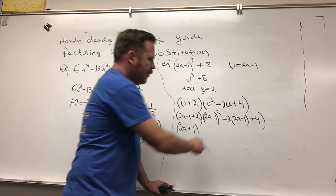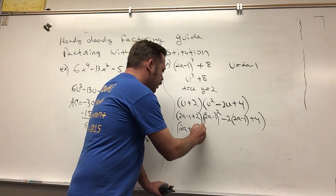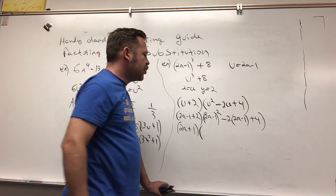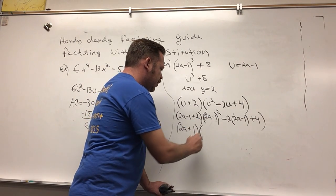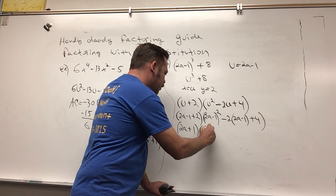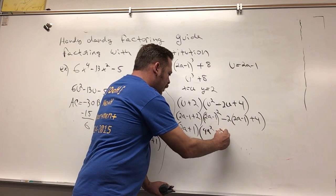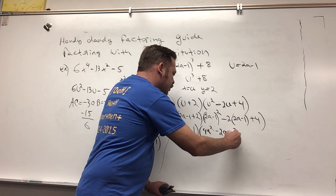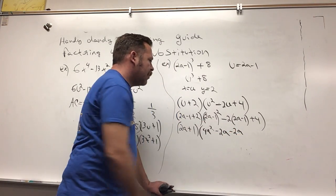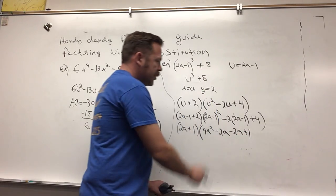I'm going to do everything in here. I gotta square that first, order of operations, exponents first. If I square 2a - 1, I would do 2a times 2a, which is 4a², 2a times negative 1 is minus 2a, negative 1 times 2a is minus 2a, and negative 1 times negative 1 is plus 1.